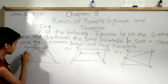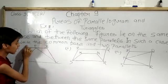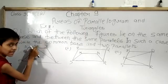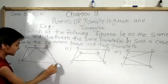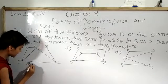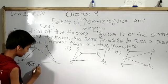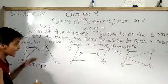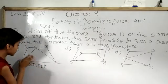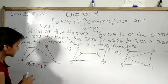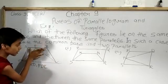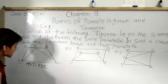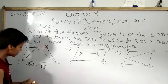For the first figure, we have a parallelogram ABCD and inside it there is a triangle PDC. We have to tell whether ABCD and PDC lie on the same base. If we take DC as the base — DC is part of parallelogram ABCD, and DC is also part of triangle PDC — so DC can be taken as the base for both figures. This means both can lie over the same base.